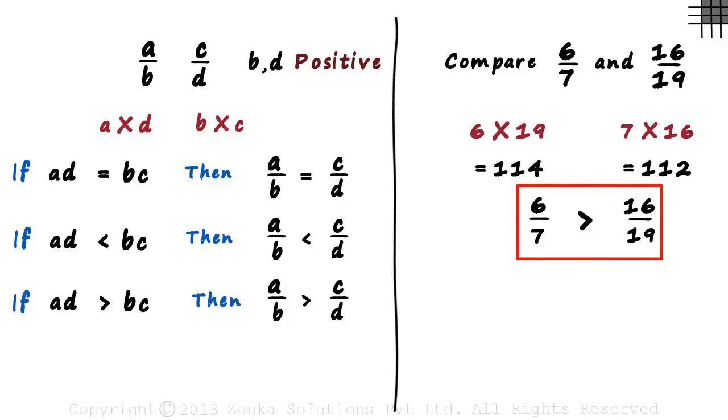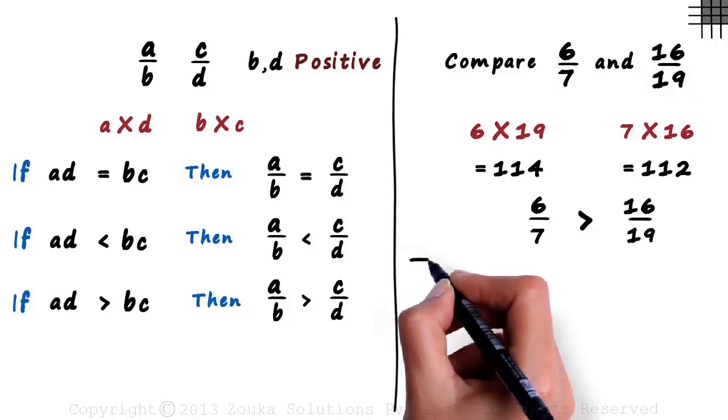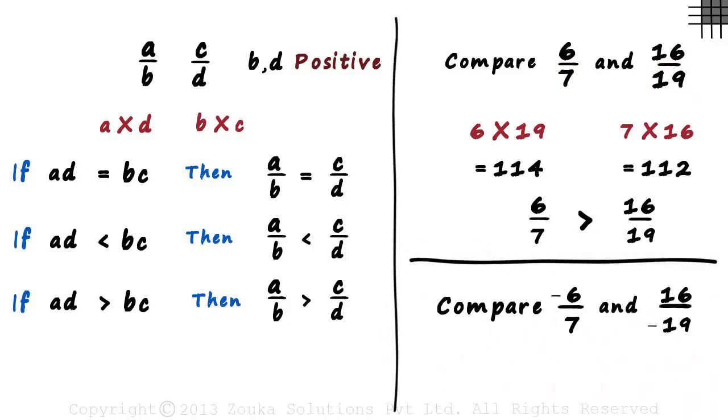That's how simple comparison of rational numbers is. But remember, the denominators have to be positive. So what if we were asked a question like this? Compare minus 6 by 7 and 16 by minus 19.